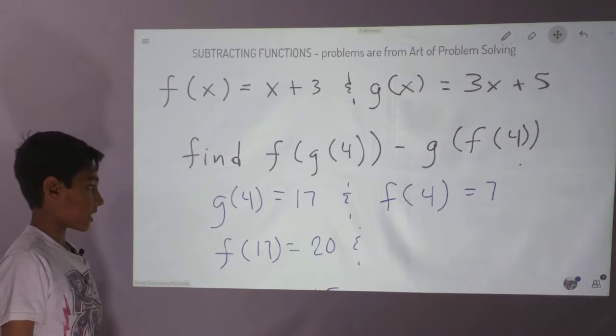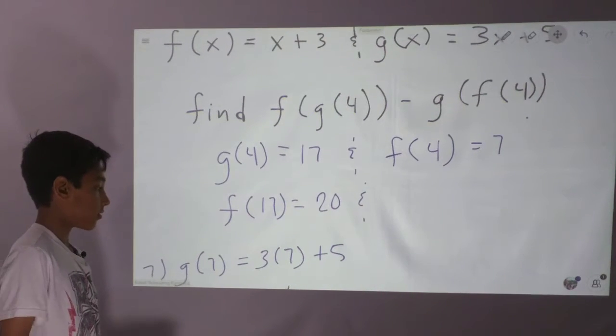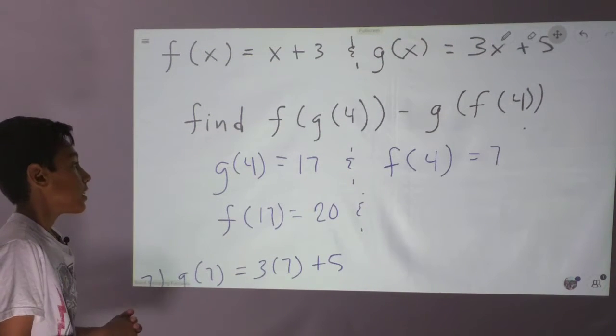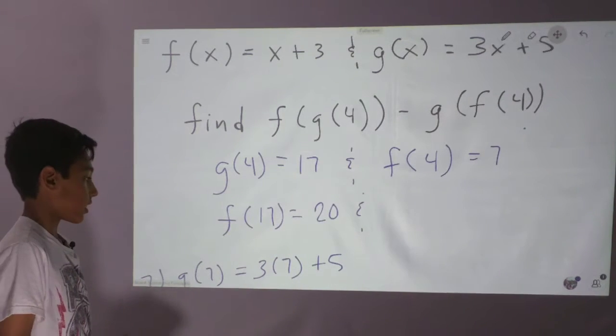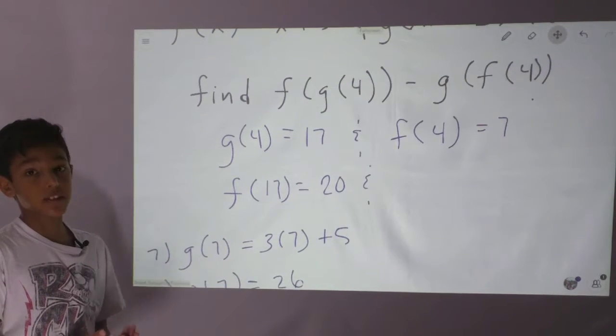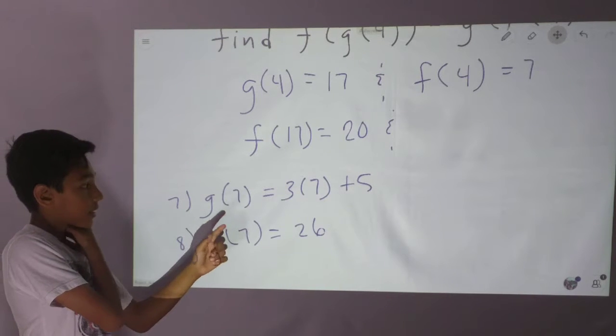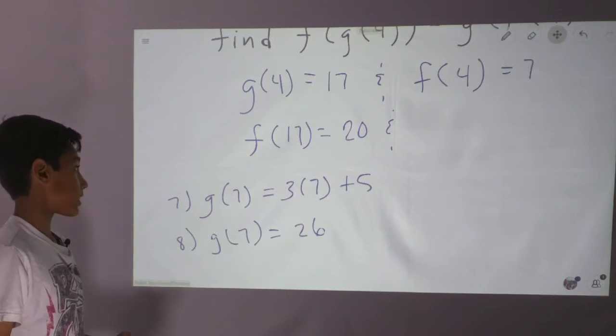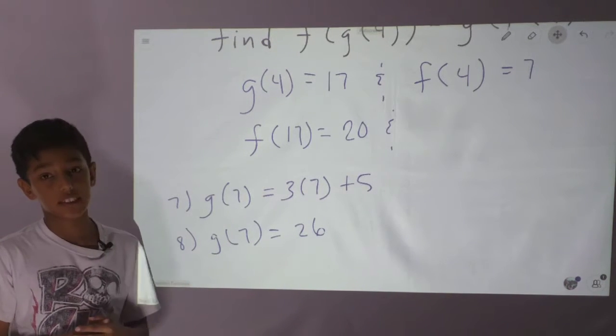So we got f of 17 equals 20. Now we go to g of 7 equals 3 times 7 plus 5. We got it the same way. So f of 4 equals 7, so g of 7 equals 3 times 7 plus 5 because we substitute 7 for x. So 3 times 7 is 21, and 21 plus 5 is 26.